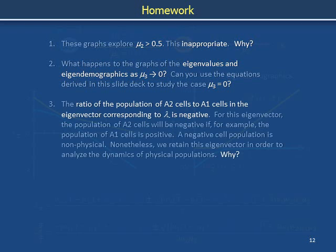The ratio of the population of orange cells to blue cells in the eigenvector associated with the eigenvalue lambda minus is negative. For this eigenvector, the population of orange cells would be negative if, for example, the population of blue cells were positive. A negative cell population is non-physical. Nonetheless, we retain this eigenvector in order to analyze the dynamics of physical populations. Why? Is it okay for eigenvectors to have negative components?